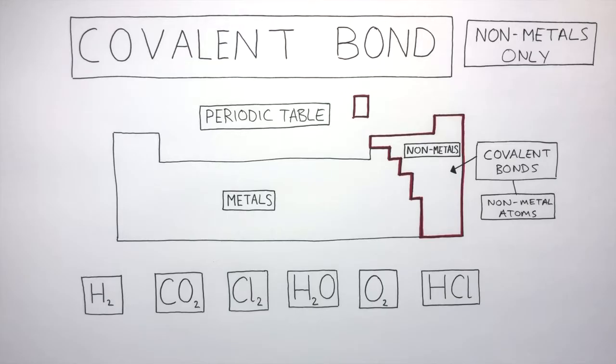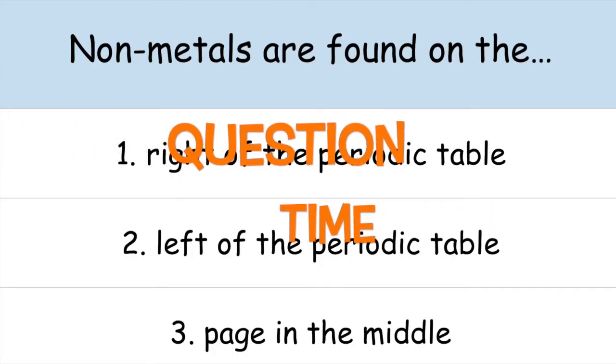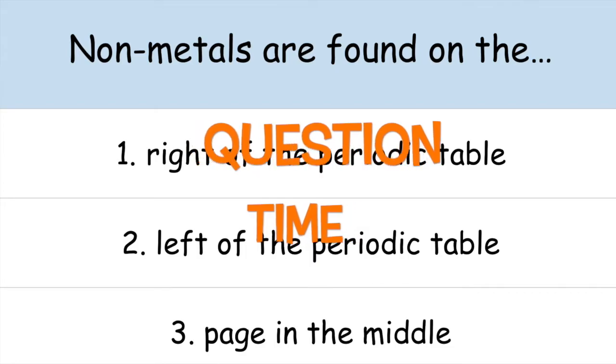All six substances have covalent bonding. This is because they all contain non-metal atoms. It's question time. Attempt these questions to check your understanding.